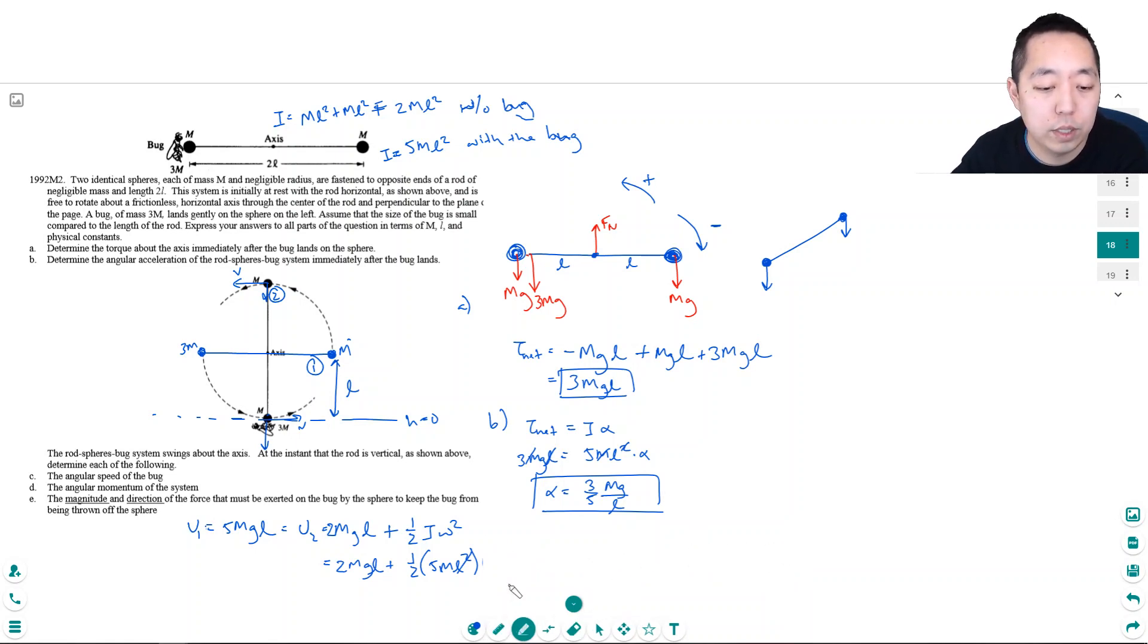So then I have, if I move this to the other side, 3mg·l is equal to 5 halves ml squared omega squared. The masses cancel, and one of these l's cancel, so omega squared is equal to six-fifths, because I multiply by two-fifths on both sides, g over l.